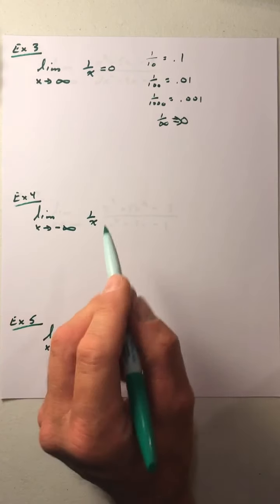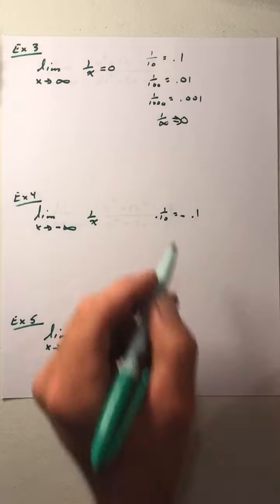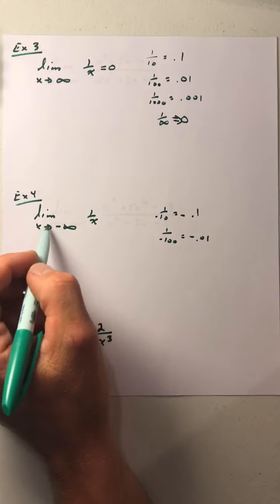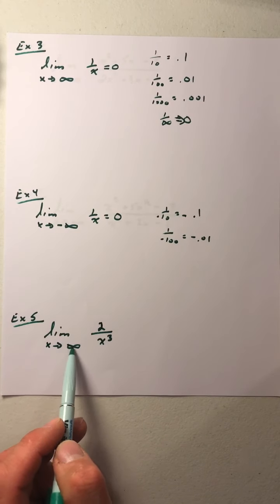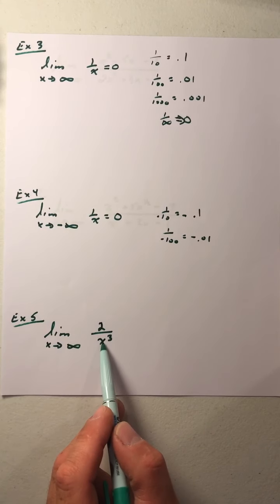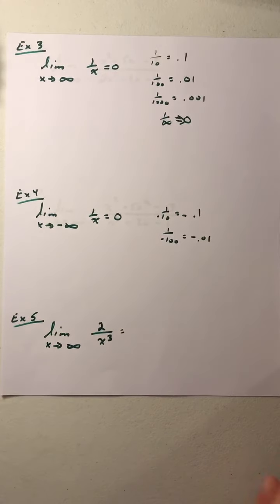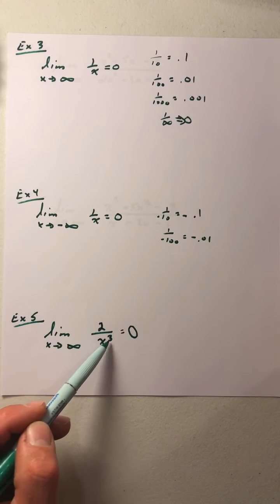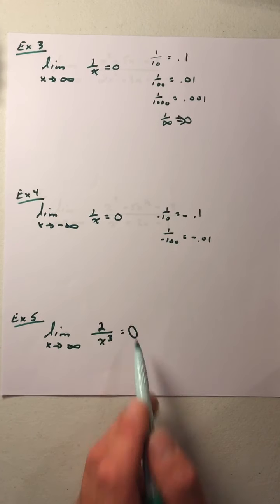What happens as x goes to negative infinity of 1 over x? Again, plugging in values like negative 10 gives negative 1 tenth, and these numbers are getting closer to zero. So the limit as x goes to negative infinity of 1 over x is also zero. In example 5, the limit as x goes to infinity of 2 over x cubed — as x gets larger and larger, we're cubing that number and dividing 2 by it. Taking 2 and dividing by a larger and larger number, we still get zero. You can pause and verify with a calculator using x = 10, 100, 1,000.